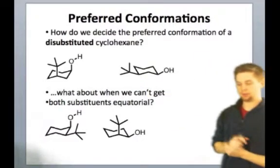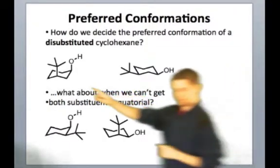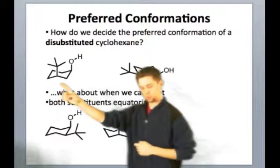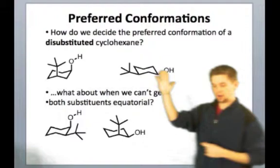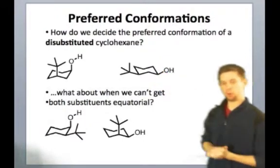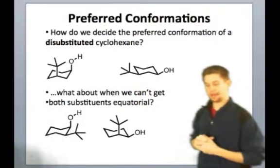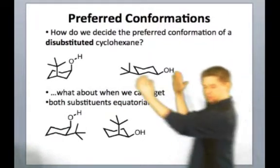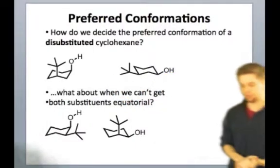We have two substituents on the ring, a tert-butyl group right here. That's the carbon with three methyl groups attached. And the hydroxyl group right here, same on this other conformer. We see that in one conformer, we have both substituents equatorial. In the other one, we have both substituents axial. So clearly, it's going to be this conformer here that's going to be the most stable of the two, right?